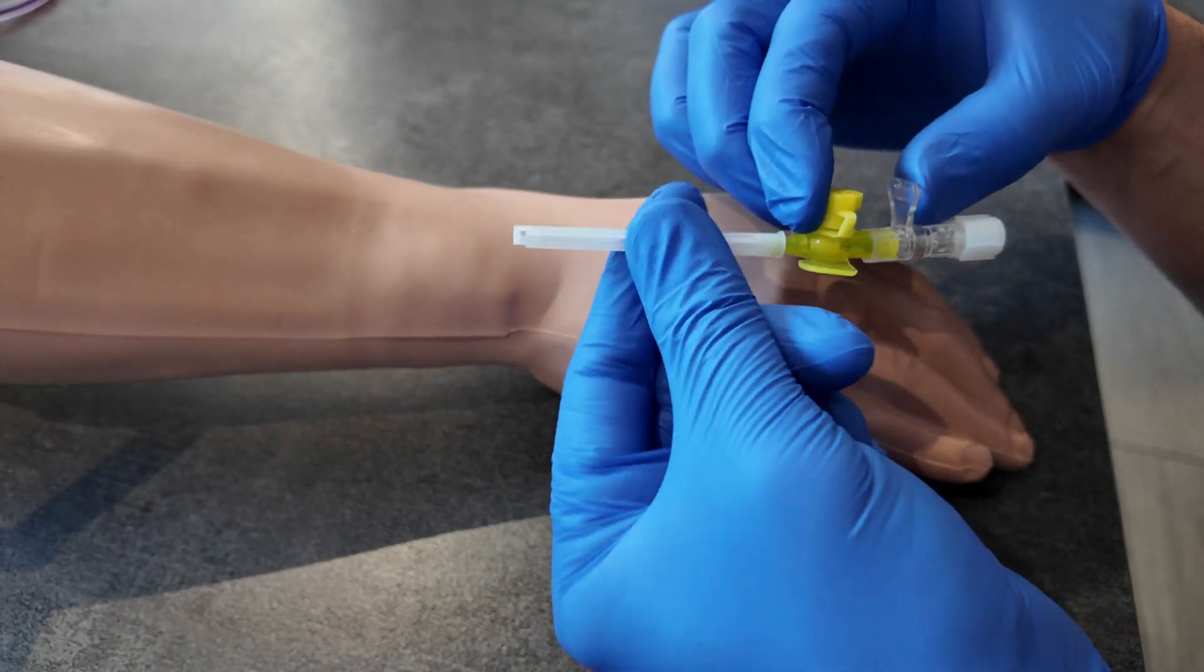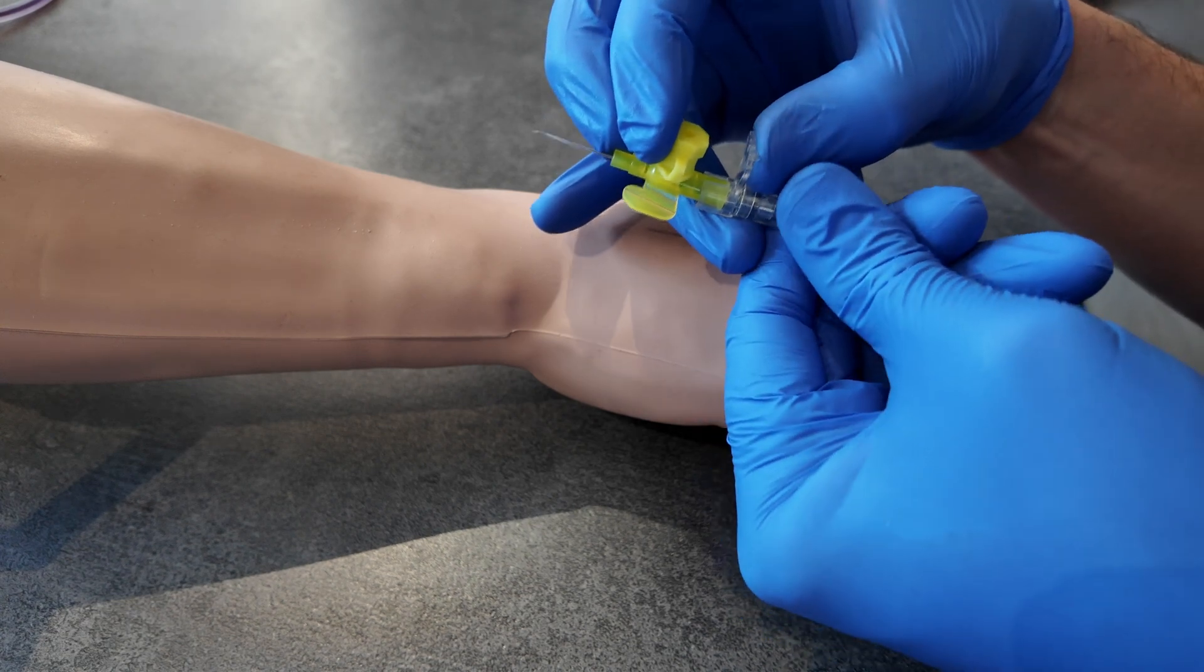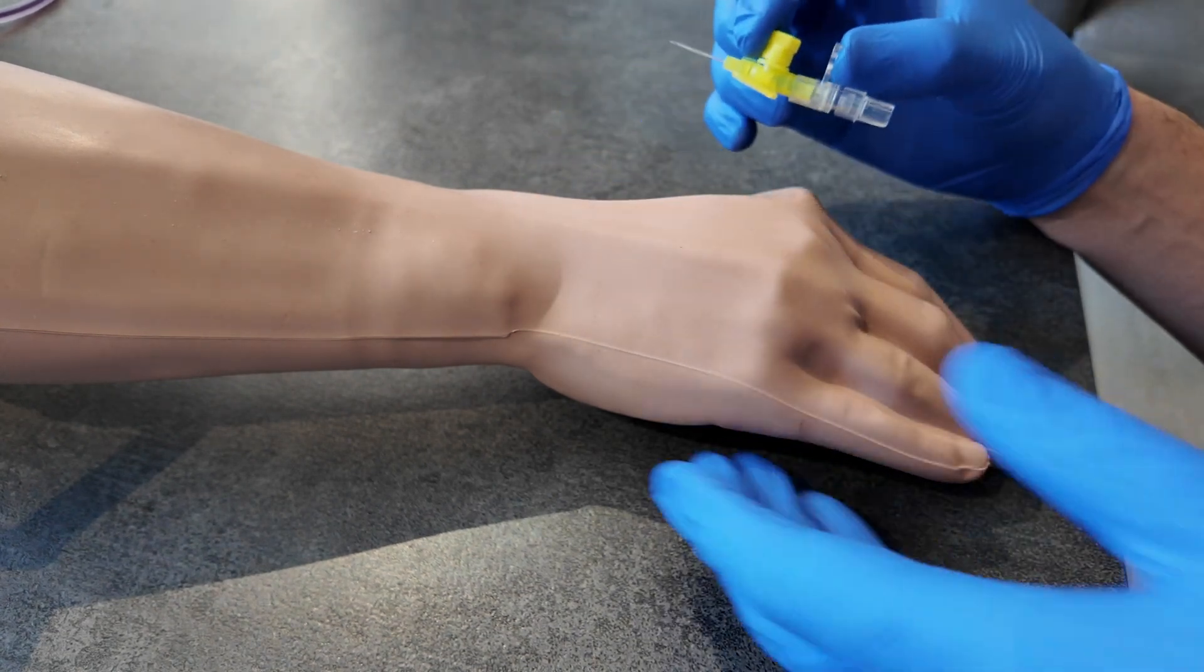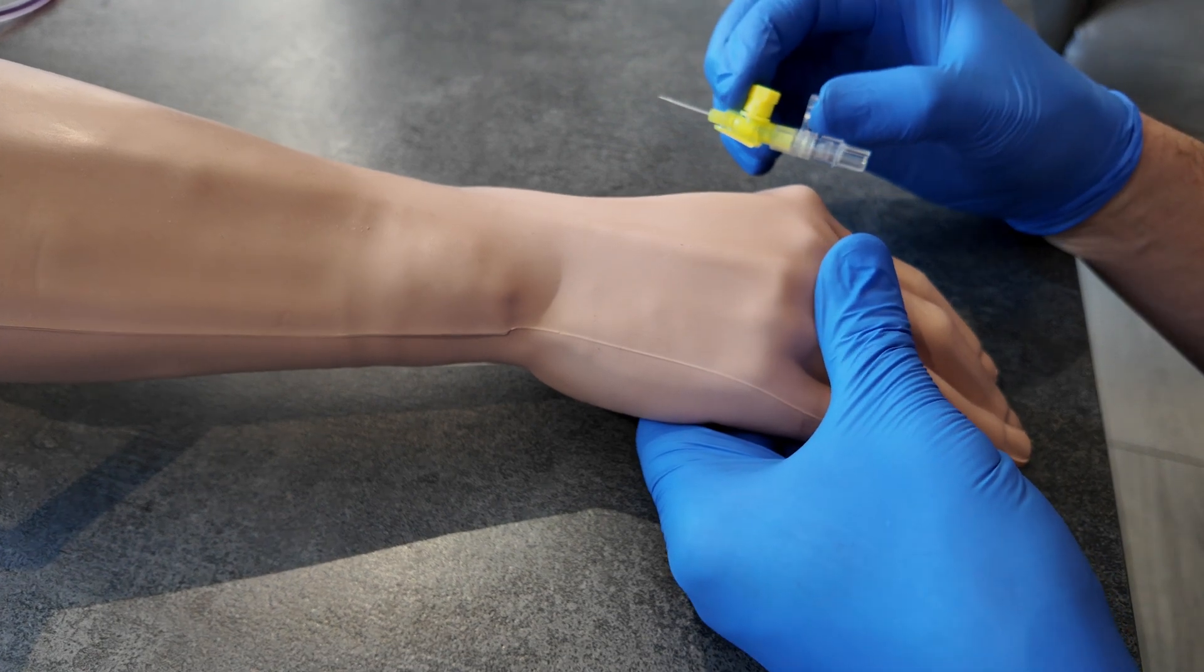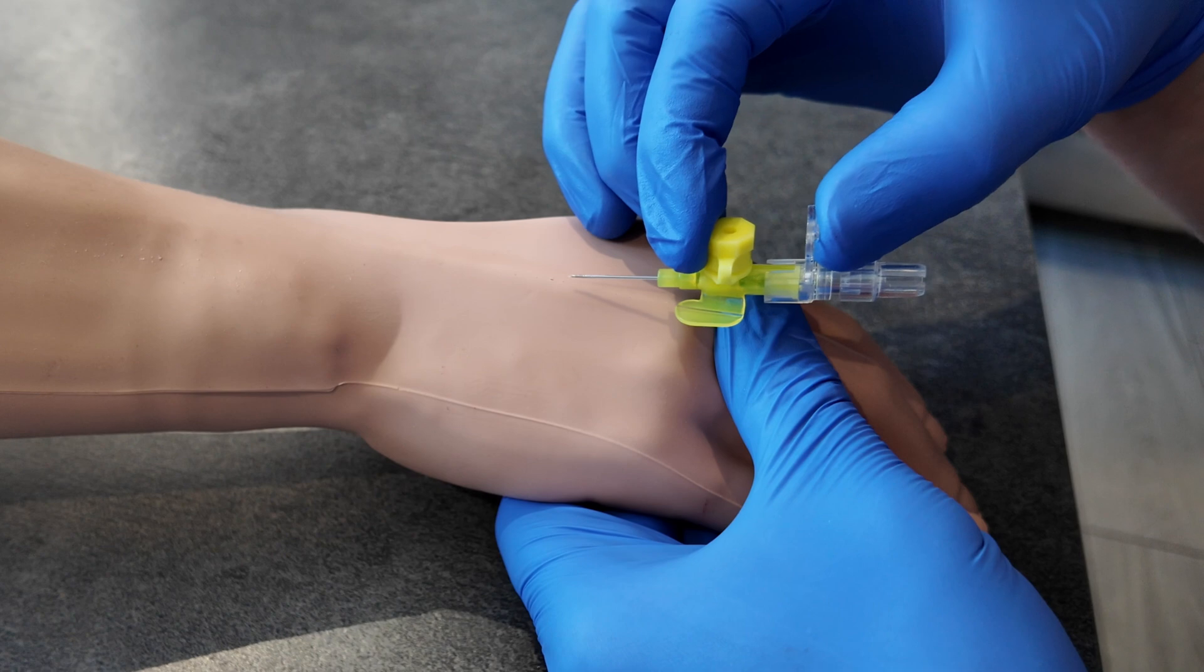Take the sheath off the needle, put that to one side, and then loosen the white luer lock cap or take it off completely. Then we'll be pulling the skin taut like this on our chosen vein, 10 to 20 degrees to the skin.